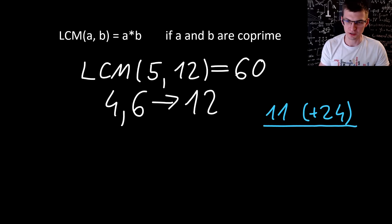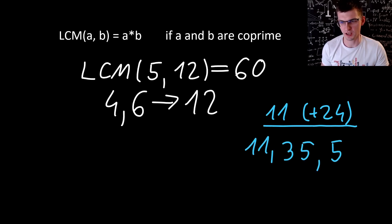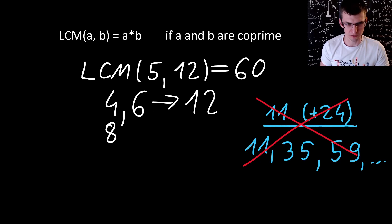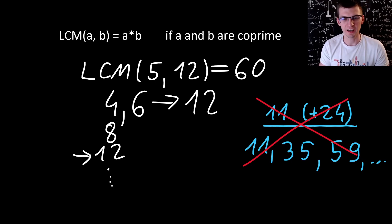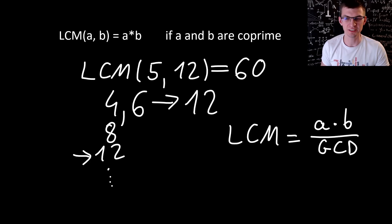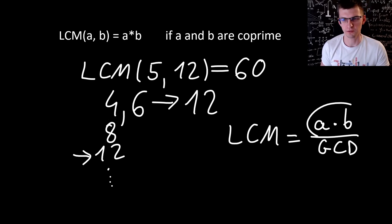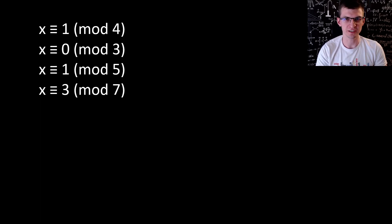If you used the product instead of the LCM, you would miss some values and maybe also the solution. In the previous example you would have 11 increased by 24 multiple times — that's a sequence 11, 35, 59 and so on — and you'd miss 47, which is a solution for the first two congruences. The easiest way to compute the LCM for two non-co-prime values is to write down multiples of one of the values — like 4, 8, 12, 16 and so on — and among them find the first one divisible by the other value. 12 is divisible by 6, so LCM is 12. Alternatively, use the formula: LCM equals the product divided by the greatest common divisor of A and B. The GCD of 4 and 6 is 2, so LCM is 24 divided by 2.